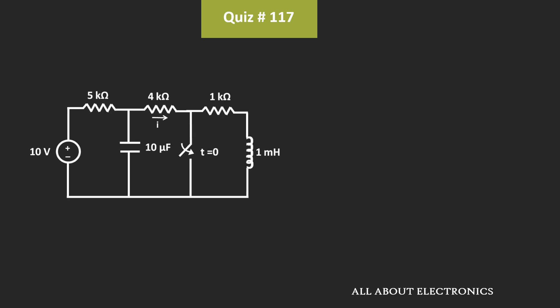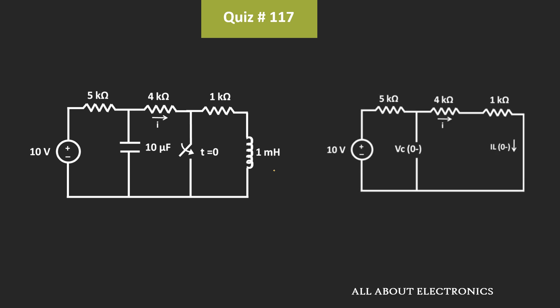Now before the time t is equal to zero, since a long time this switch is in the open condition. That means, in the steady state condition, this capacitor will act as the open circuit, while this inductor will act as the short circuit. So at time t is equal to zero minus, if we see the equivalent circuit, then it will look like this. For the given circuit, let's find the value of the voltage across the capacitor as well as the current through the inductor.